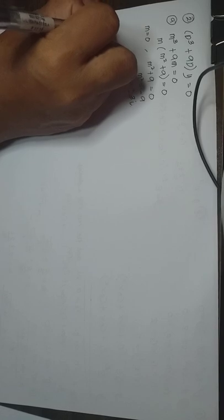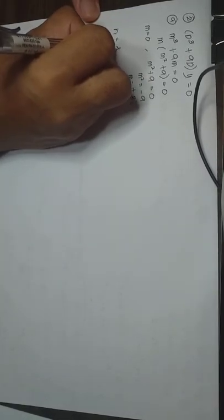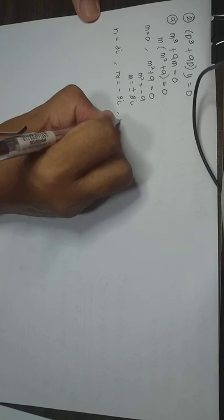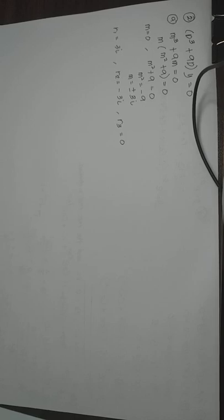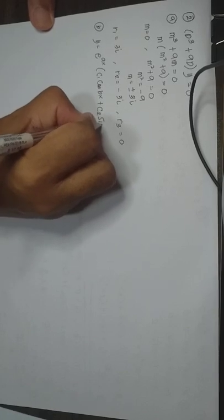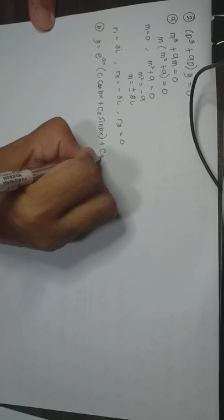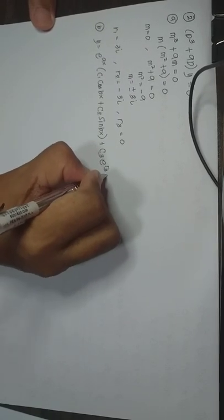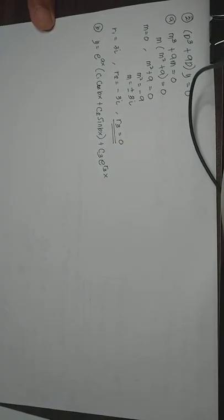So we have R sub 1 equal to 3i, R sub 2 equal to negative 3i, and R sub 3 equal to 0. Applying the generalized form of solution, Y is equal to E raised to AX times C sub 1 cosine BX plus C sub 2 sine BX, plus C sub 3 E raised to R sub 3 X, because we have a real and distinct root for the auxiliary equation.